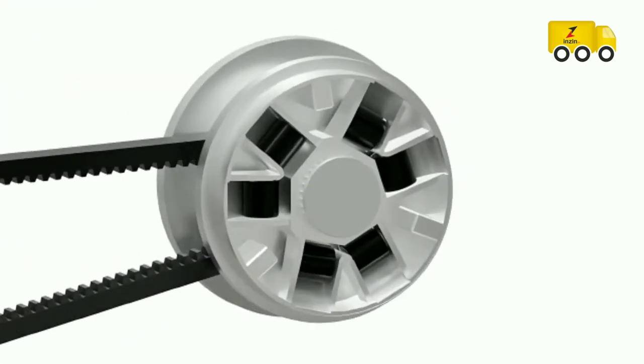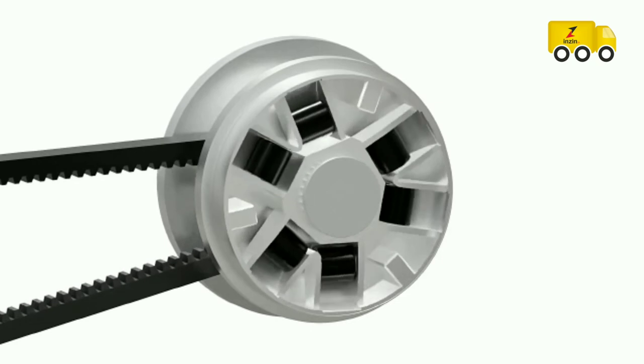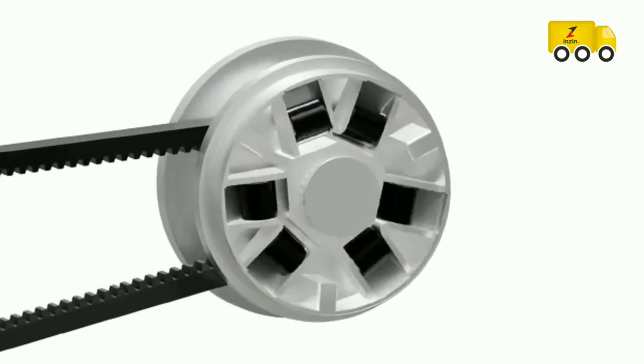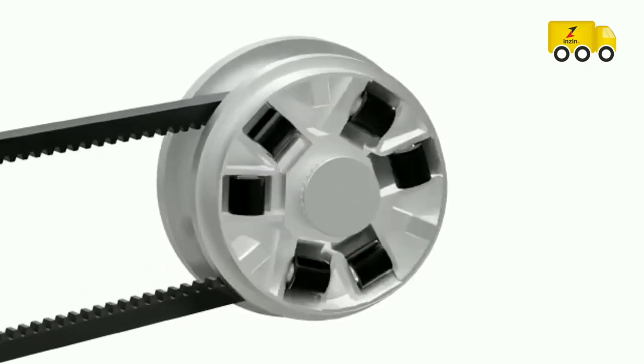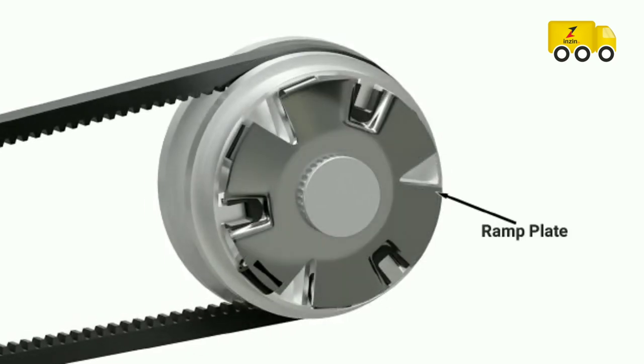The sliding conical plate of the driver pulley has a set of rollers or sliders as shown here. When the engine is at low RPM, the rollers are held near the center of the pulley. As the engine gains speed, centrifugal force causes rollers to move outwards along a curved surface. These rollers push against the ramp plate. Since the ramp plate is fixed, the sliding conical plate is forced towards the other plate.